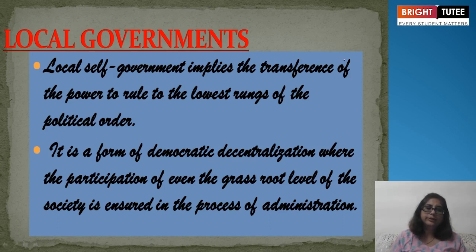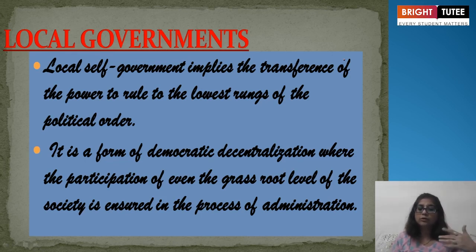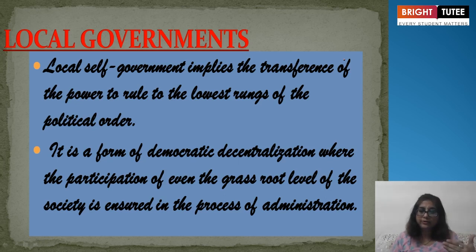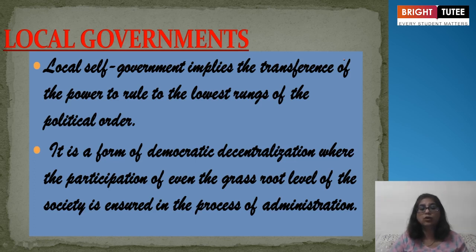Local self-government implies the transference of power to rule to the lowest rungs of the political order. It is a form of democratic decentralization — that means the division of powers at different levels: central government, state, and local government. All three governments enjoy their own powers as well as their individual judiciary. It is democratic decentralization because we also go through a voting and election process to elect these bodies.